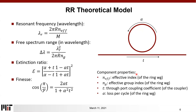After extracting these parameters, we use them to calculate the effective index with knowledge of the resonance frequency, and calculate the effective group index of the ring with knowledge of the resonance frequency and the free spectral range. Knowing the extinction ratio and the finesse, both contain the loss across the wafer alpha and the coupling of the ring C. Solving these two equations together, we can find the coupling coefficient and the loss.